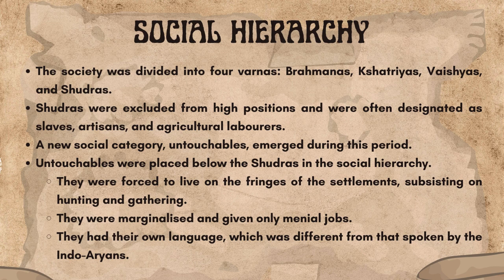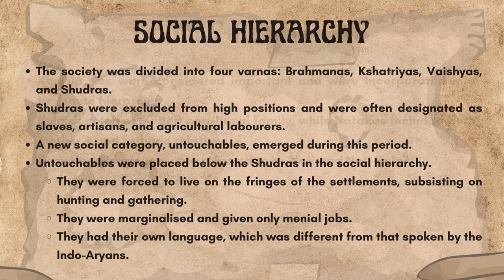A new social category — untouchables — emerged during this period. Untouchables were placed below the Shudras in the social hierarchy. They were forced to live on the fringes of the settlements, subsisting on hunting and gathering. They were marginalized and given only menial jobs. They had their own language, which was different from that spoken by the Indo-Aryans.